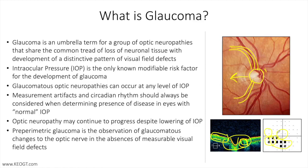There are other factors that contribute to glaucoma and optic neuropathy, for example age, ethnicity, myopia, genetics, and family history. Research continues to explore the effects of IOP-independent factors such as immunologic causes.